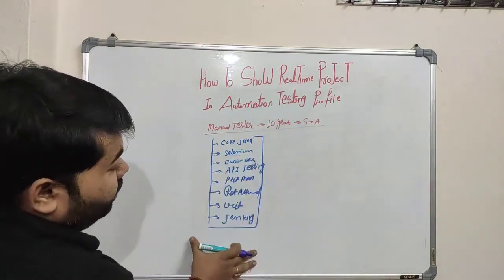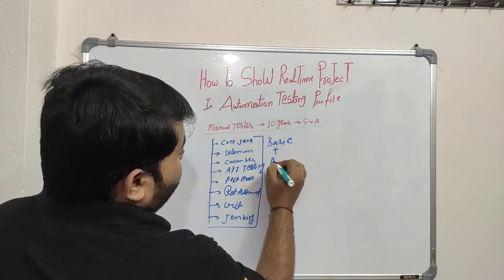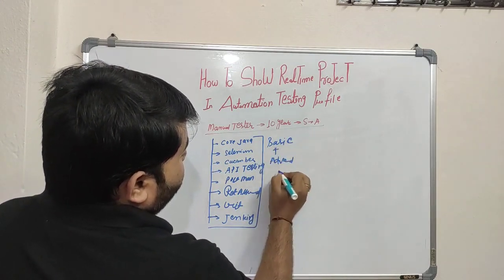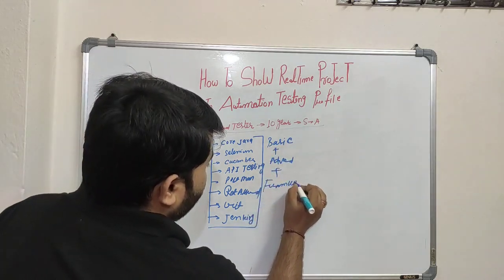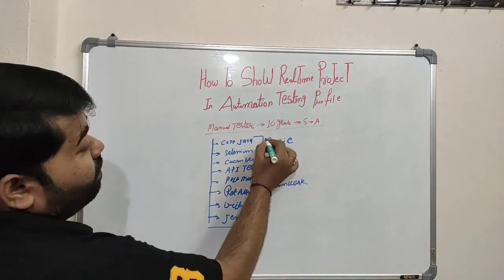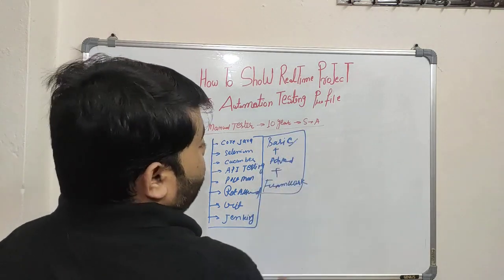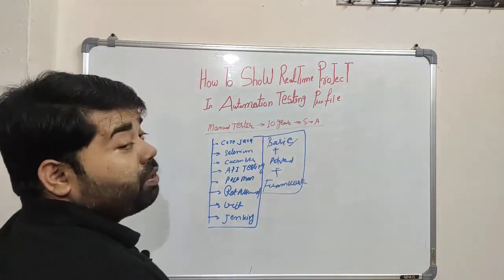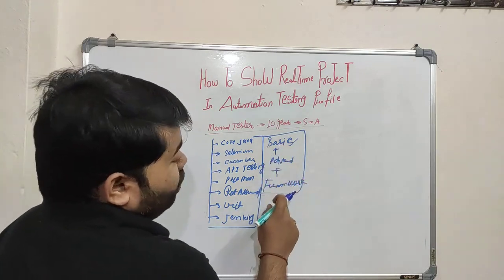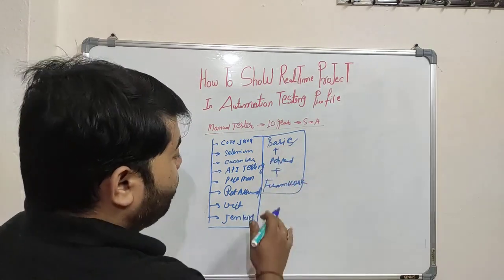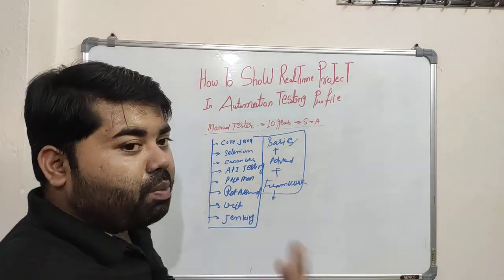You have to learn basics, plus advanced, plus framework. If you are only learning the basic part, you cannot survive in the automation profile. You have to learn basics, then advanced, then framework. When you complete the framework, you will know how the framework works, its flow, and everything.